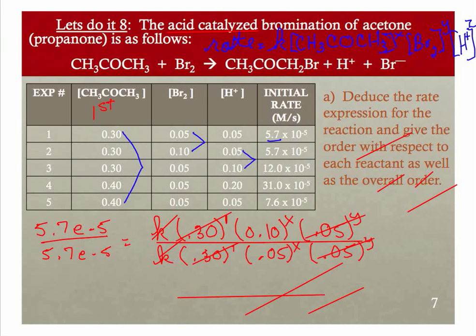I know it seems some of you have picked up on this already that this is a lot of work for something you can get much easier. What we get here is that 1 is equal to 2 to the y. Well, that means that y is equal to 0. So we have it 0 order with respect to bromine.